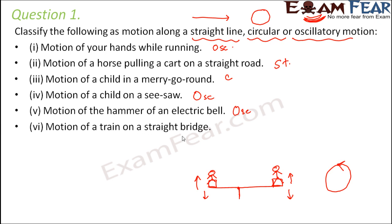Motion of a train on a straight bridge. So when the bridge is straight, obviously the train is also going to move on the straight path. So it is again a straight line motion.